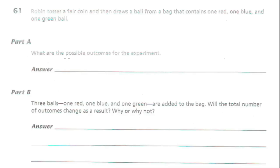Question number 61 is asking us about possible outcomes. When we think about possible outcomes, we are thinking about sample space — tree diagrams, lists, tables, thinking about possible outcomes.